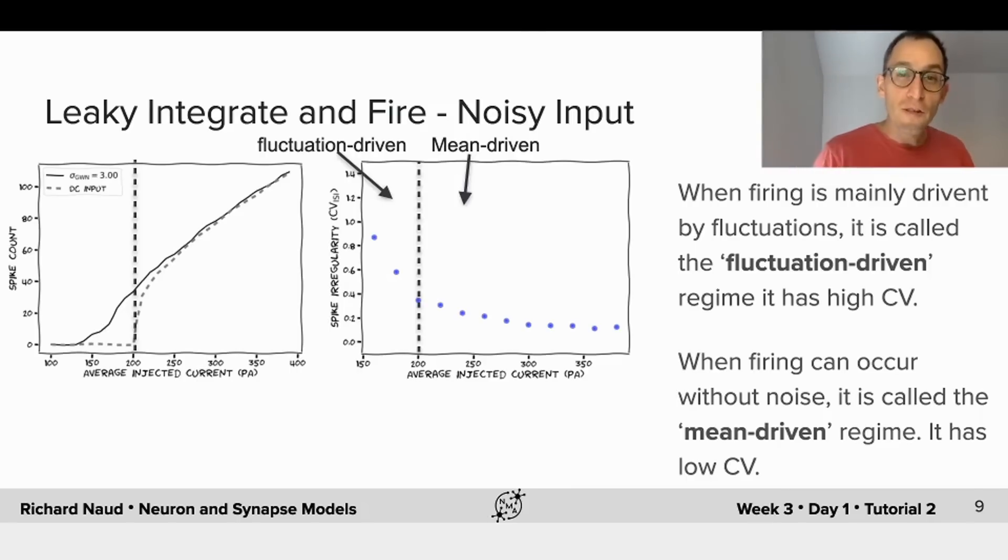Now, in the same situation that I've illustrated previously, where the response will grow as a function of the average injected current, and where we can delineate the area where you were below threshold in the absence of noise, you see that the CV will decrease with the average injected current, and that below that threshold the CV is markedly higher.